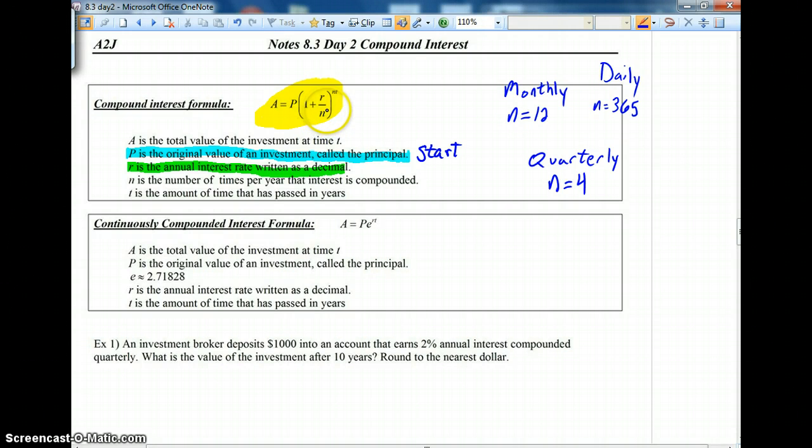n, you can see a number of n's in this formula, below the r and up high as a power, n is the number of times per year that interest is compounded. And really that's what we have off to the side here in this box. Quarterly, you can think about four quarters in a football game or four quarters in a basketball game. There are four quarters in a dollar. The word quarterly implies four. This means that you would get interest four times a year, n would equal four.